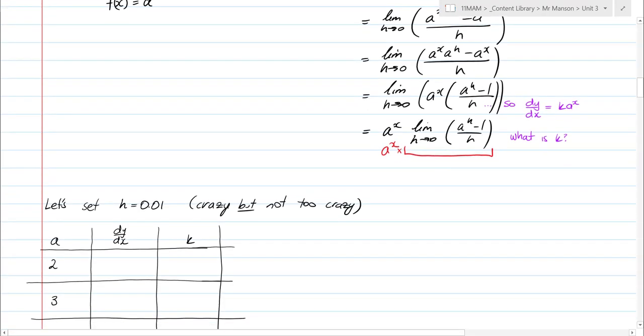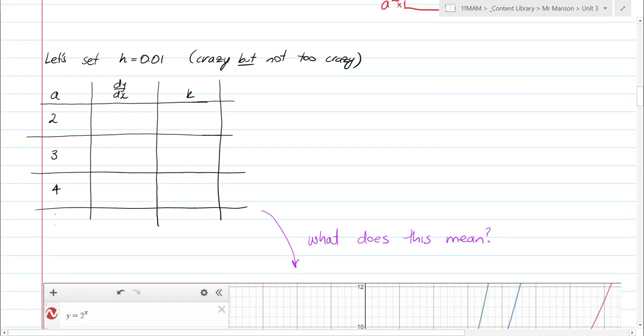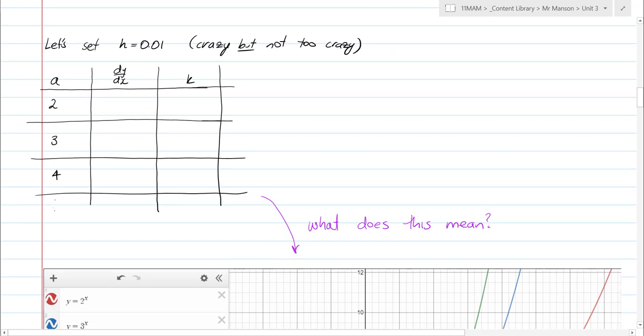So we're going to build this table now. I really want to get through this today. Ordinarily, I'd probably sit here and get you to play on your calculators and do some stuff. But I'm going to set h equals 0.01. It's not super crazy. The crazy thing to do would be to set h equals 0.0000001. But it's crazy enough. It'll give us a trend. And I'm going to do it for a equals 2, 3, and 4. But I'm going to need your help with 4.